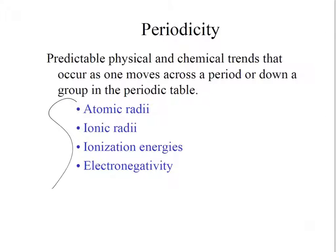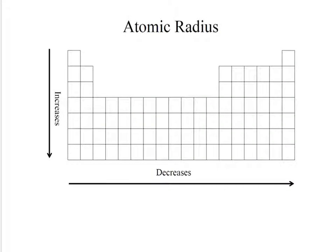So atomic radius increases down and decreases to the left. The atomic radius is defined as half the distance between two nuclei. So if we have two atoms here, that's the distance. That's your atomic radius, half of that.